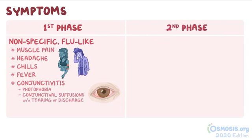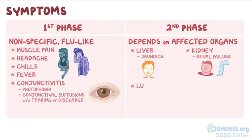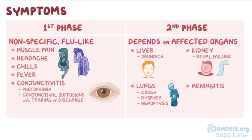In the second phase, signs and symptoms depend on the affected organ. With liver damage, there may be jaundice. With kidney damage, there may be signs of renal failure, like reduced urine output and fluid retention, which leads to a puffy face and swollen legs, ankles, and feet. When the lungs are affected, symptoms include a cough, dyspnea, which is difficulty breathing, as well as hemoptysis, or blood in the sputum. Finally, with meningitis, there may be headaches, fever, and a stiff neck.